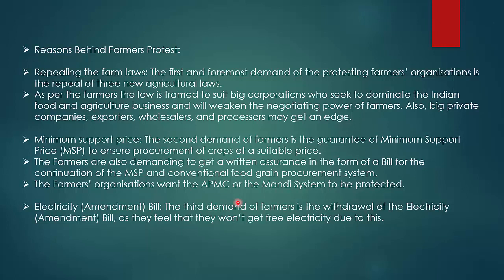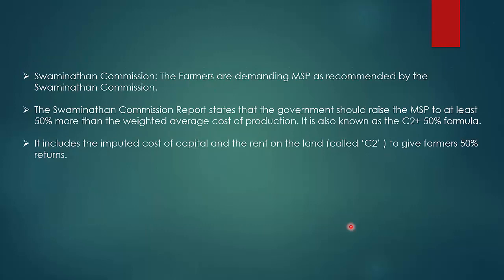The third demand of farmers was the withdrawal of the Electricity Amendment Bill, as they felt they would not get free electricity due to this. The farmers were afraid the free electricity they had been given would be closed.